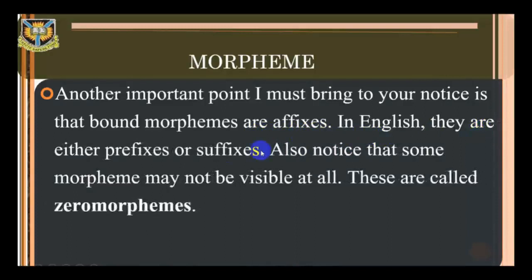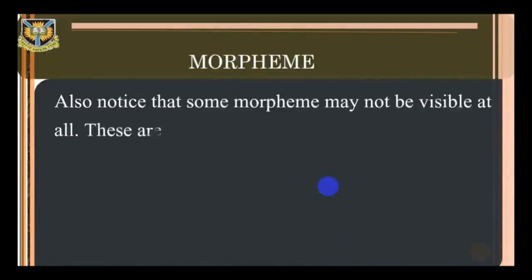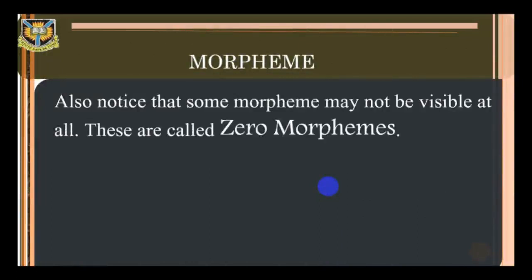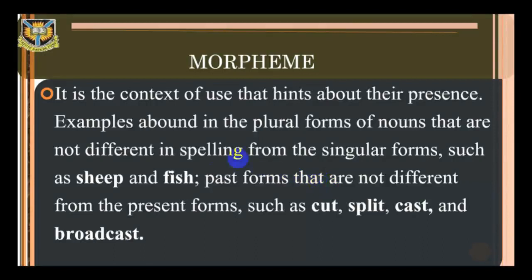In English, bound morphemes are either prefixes or suffixes. Also, some morphemes may not be visible at all — these are called zero morphemes. It is the context of use that hints about their presence. Examples abound in the plural forms of nouns that are not different in spelling from the singular forms, such as sheep and fish, and past forms not different from the present forms, such as caught, spit, cast, and broadcast.